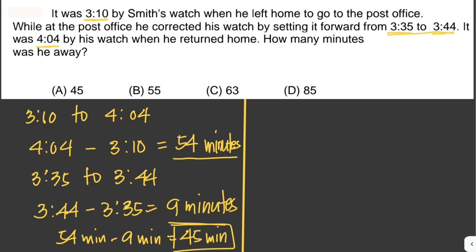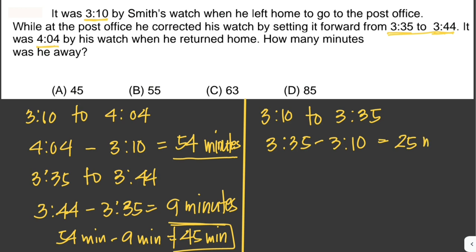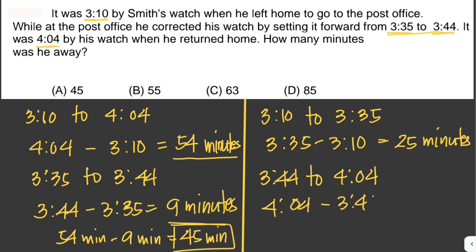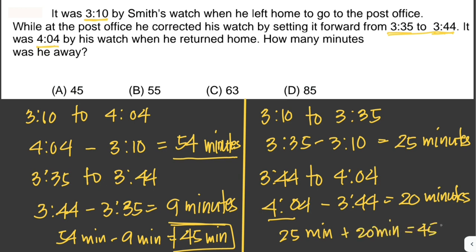Method 2: The time from when he left home at 3:10 to when he arrived at the post office at 3:35 is 25 minutes. Then from 3:44 to 4:04 is 20 minutes. Adding them together: 25 minutes plus 20 minutes equals 45 minutes. We get the same answer, so the answer is letter A: 45 minutes.